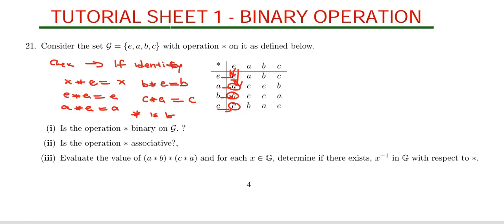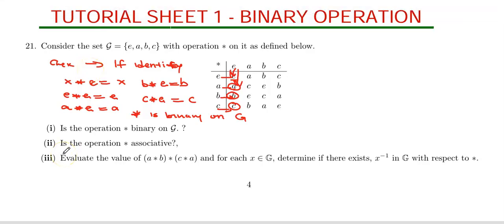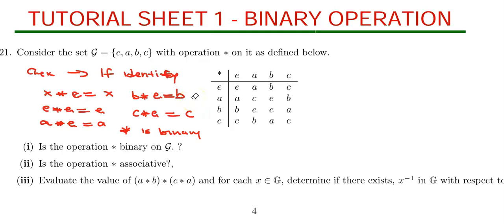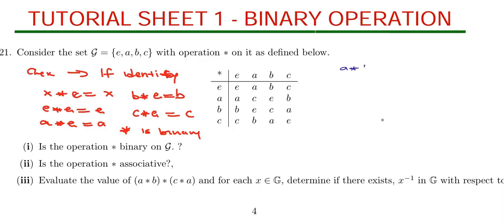Since the identity exists, star is binary on D. Now let's do question two: to show if star is associative, we write the associative law which states that a star (b star c) is equal to (a star b) star c. It is the same result but the associative law differs by the grouping — the brackets.